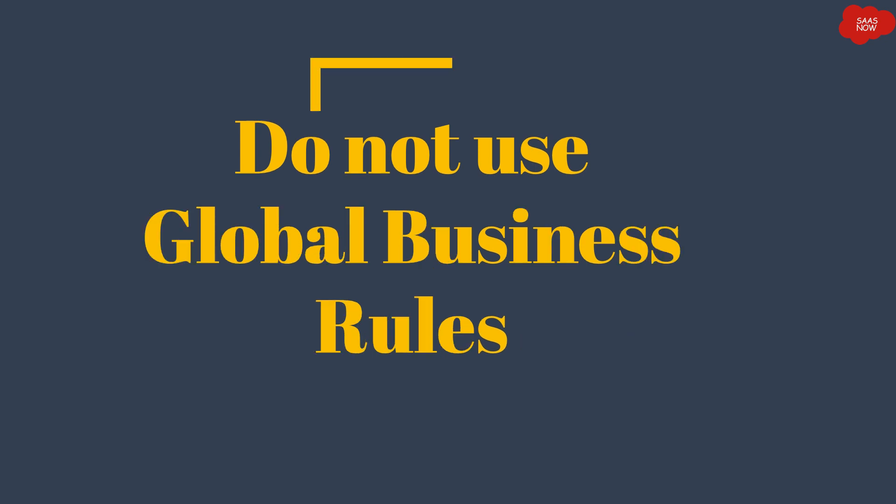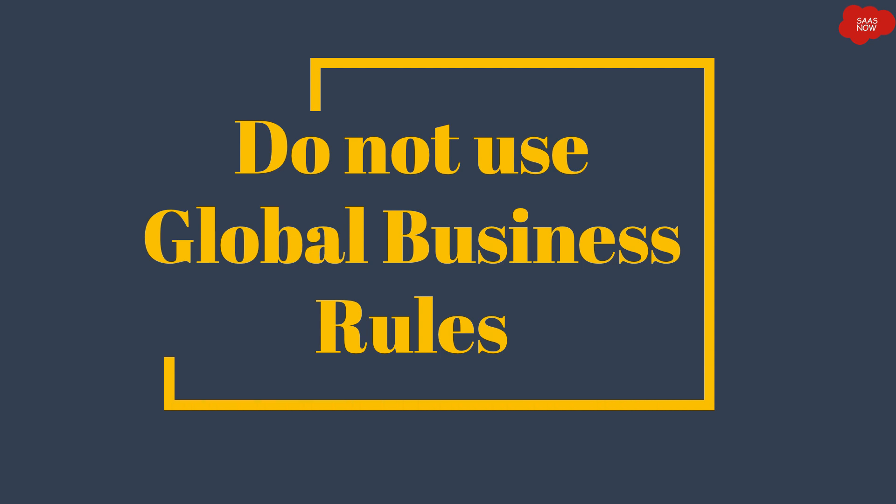The next best practice is do not use global business rules. When you select 'global' in the table field of a business rule, it becomes a global business rule. Global business rules run on every page, which is not efficient and impacts performance — because the system doesn't know which table it's for, it will run on every table and every page you open.